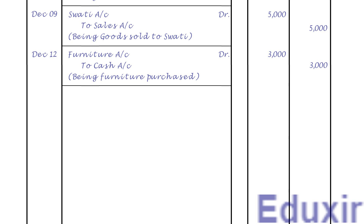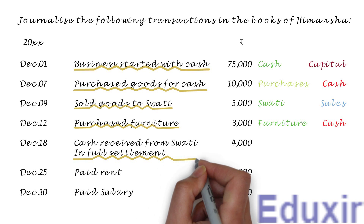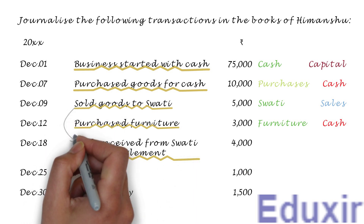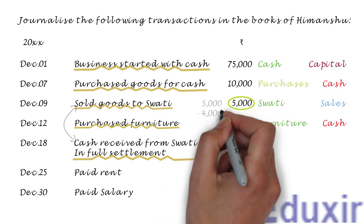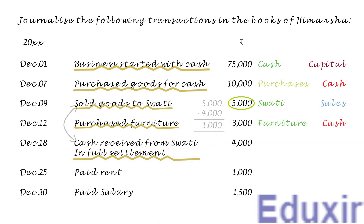Let us now take up the next transaction. In this transaction, the business has received 4,000 rupees of cash in full settlement. Note that, this transaction is related to the transaction done on 9th December, wherein the business had sold goods worth of 5,000 rupees to Swathi. Swathi is now returning 4,000 rupees from those 5,000 rupees she owed to the business. Also note that it is specified that this payment is done for full settlement. From 5,000 rupees, if you subtract 4,000 rupees, we get 1,000 rupees. This is the discount allowed to Swathi. So, after providing the discount to Swathi, all her dues are cleared. In this transaction, all the debt owed by Swathi to the business is cleared. In other words, the debtor asset of the business is decreasing. The rule to record any decrease in the asset is to credit the corresponding assets account. In this case, the debtor Swathi account should be credited.